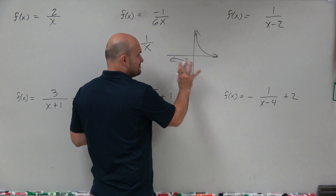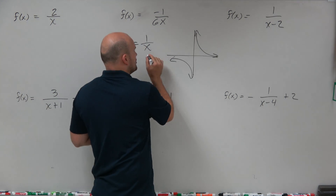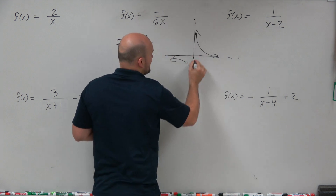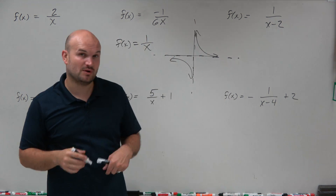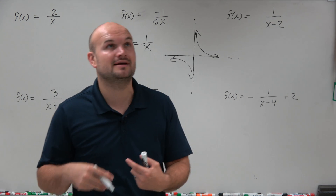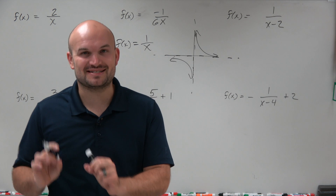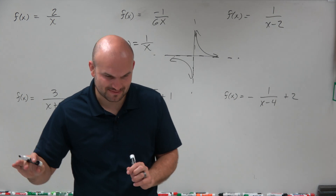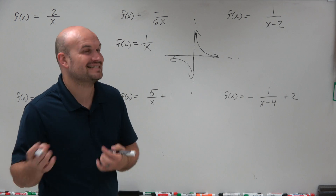There's no intersection with the asymptotes. There's actually a horizontal asymptote at 0 and a vertical asymptote at 0 as well. So a vertical asymptote on the y-axis and a horizontal asymptote on the x-axis.